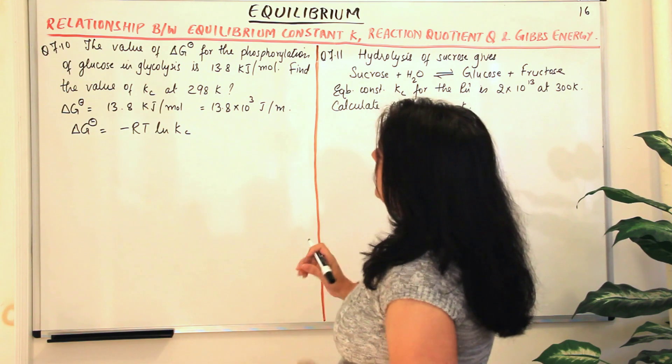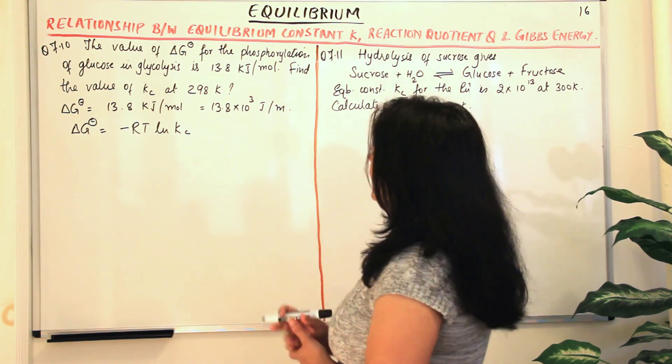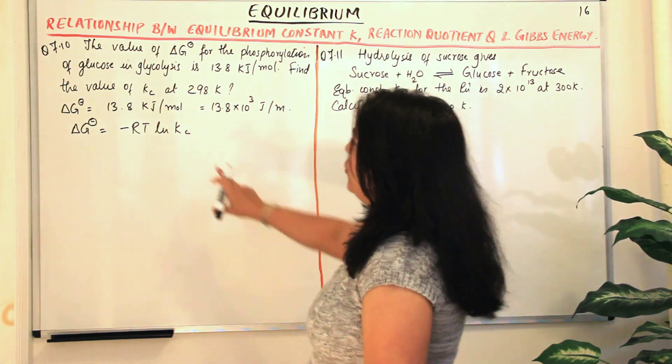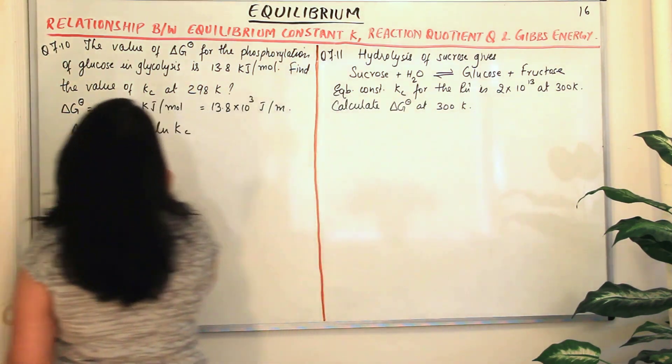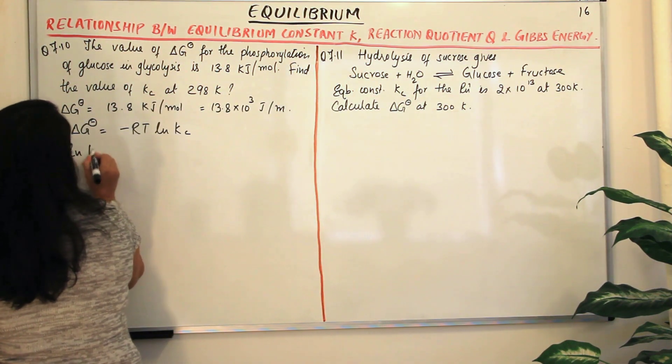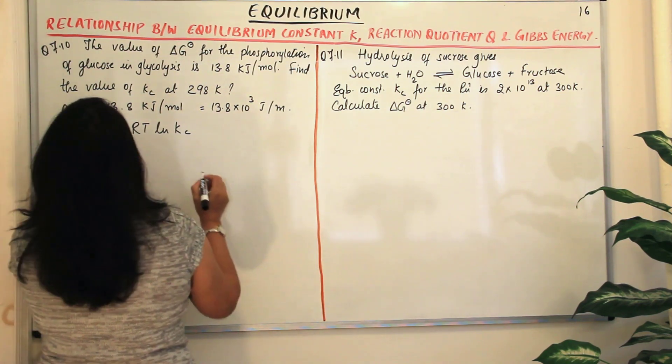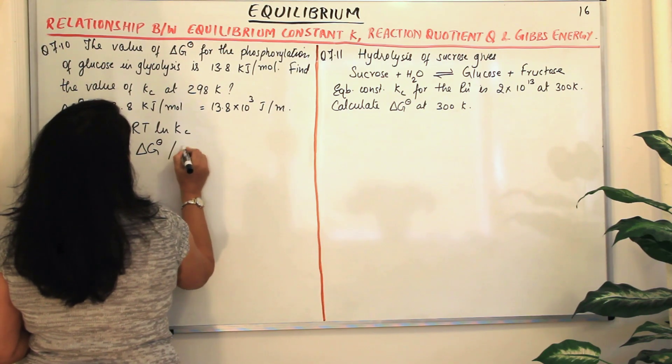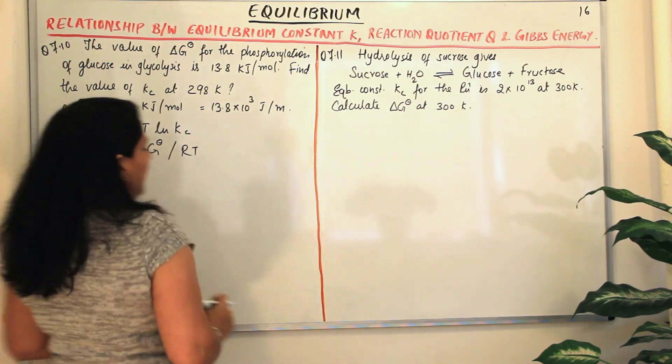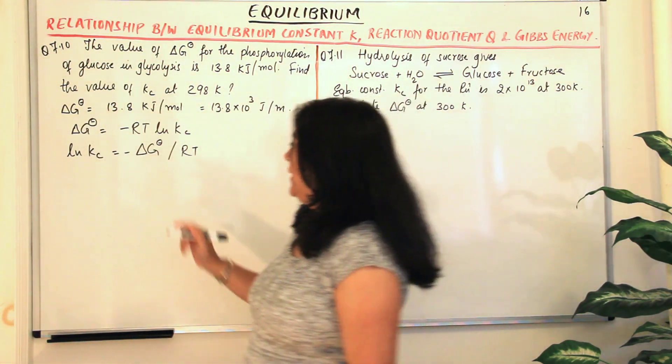So the value of delta G for phosphorylation is given to us and we need to find the value of Kc. So we are looking for ln Kc. We rearrange the equation so that ln Kc is equal to minus delta G naught upon RT.